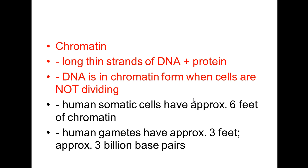We have the term chromatin. Chromatin refers to long thin strands of DNA plus protein, and this is the form that the DNA is in when the cell is not dividing. In your somatic body cells, you have about six feet of chromatin packed into each nucleus — that means this chromatin really is a long, thin type of material.